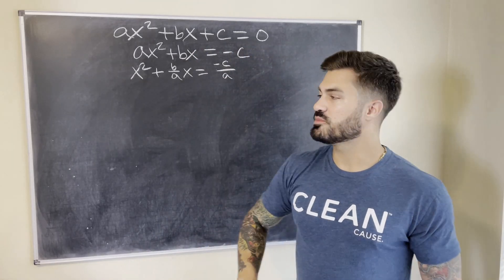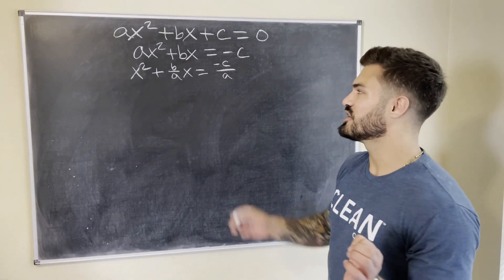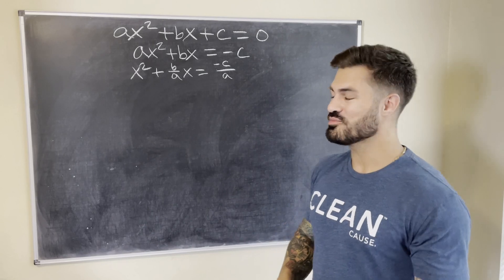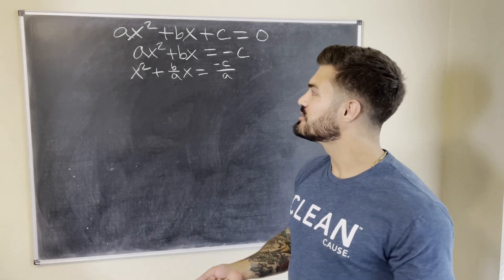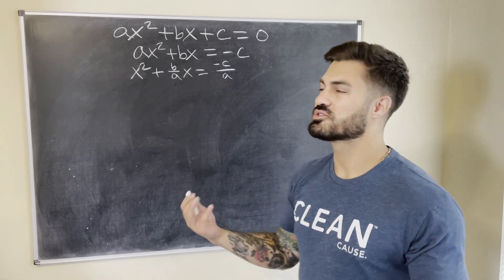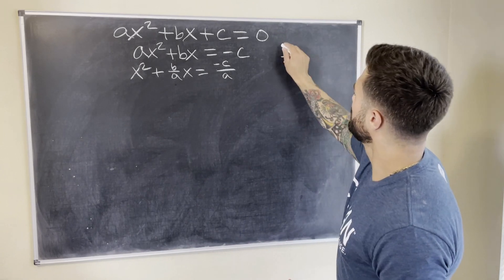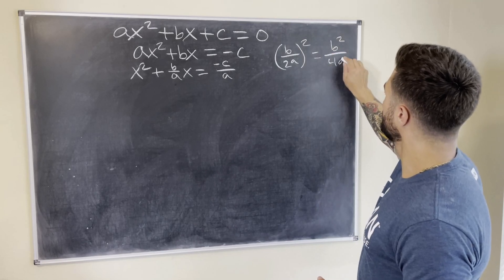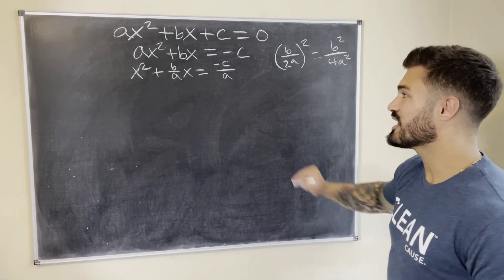Now our leading coefficient is one — we're in good shape. The next step is to add something to both sides that gives us a perfect square trinomial on the left. We look at the b term, which here is b/a, take half of it — that's b/2a — and square it. So we're adding b²/4a² to both sides.